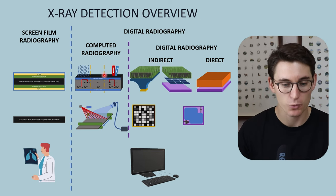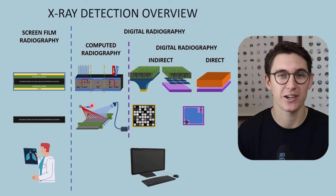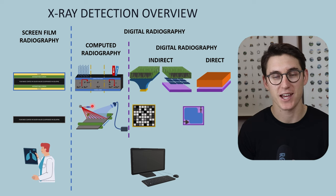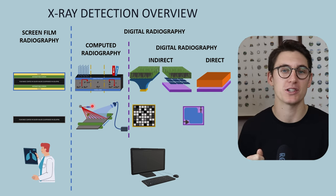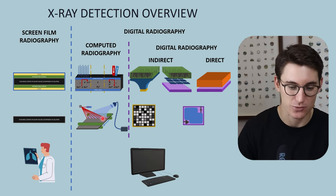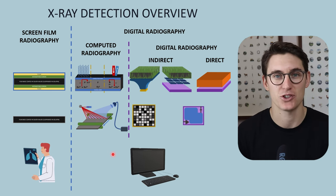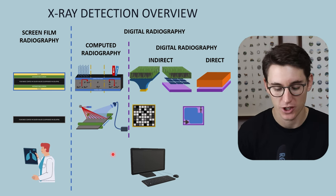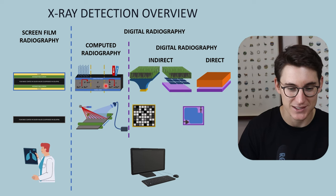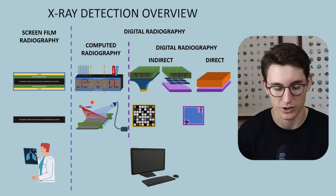There are two processes to go through today. The first is acquiring our latent image — exposing our cassette to x-rays and forming what is known as the latent image. The second process is processing that latent image into a digital image. Let's look first at the structure of the cassette itself and how we go about creating a latent image.